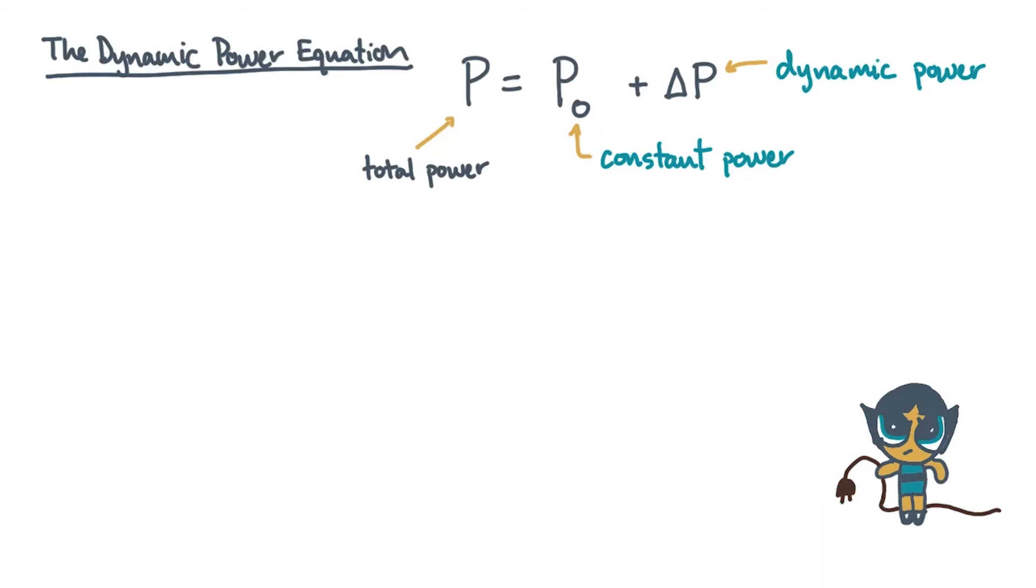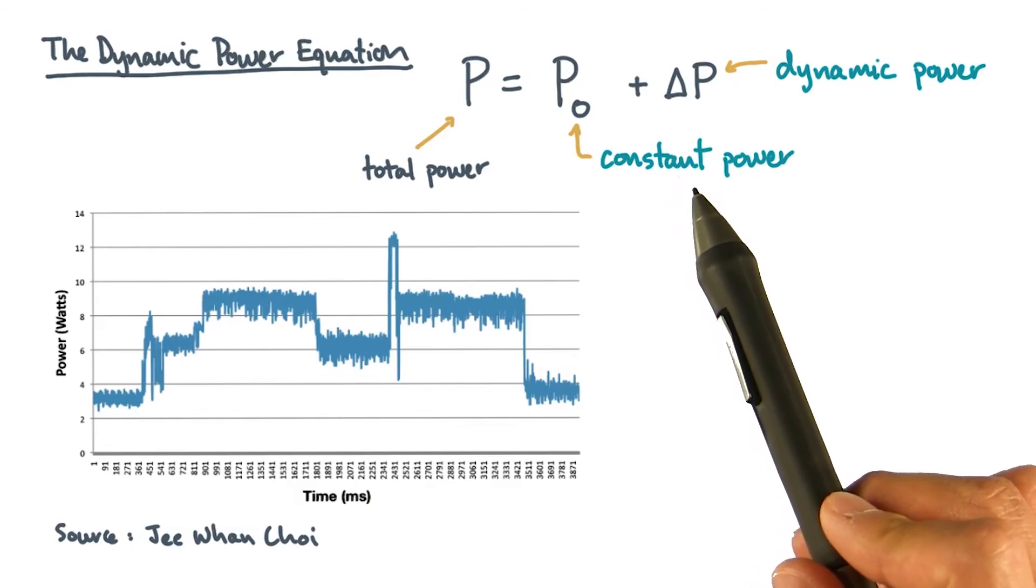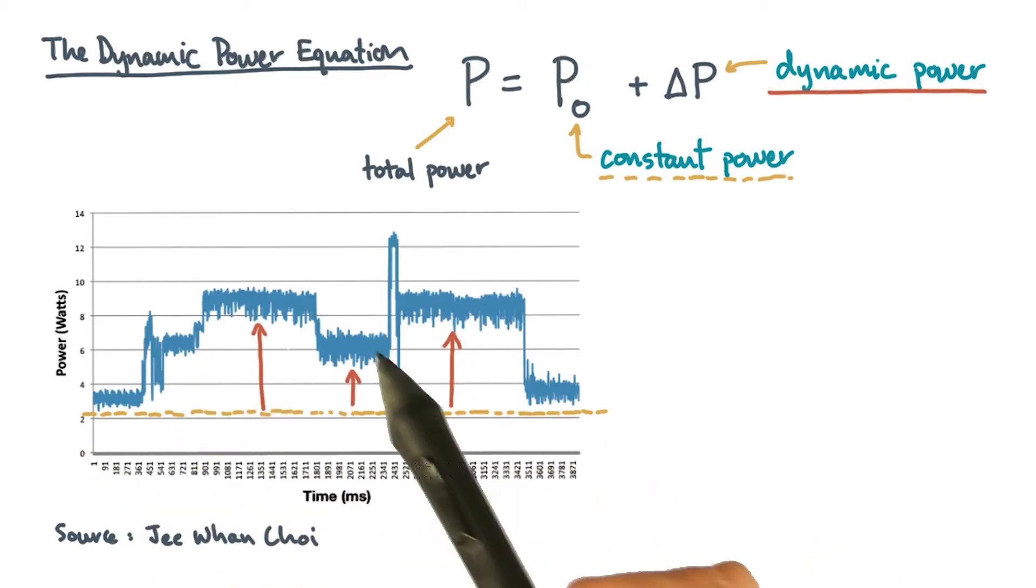Recall that the power in a computing system has, roughly speaking, two parts. The first is constant power, which is what you pay just to keep the system on. The other part is dynamic power. That's what you pay above and beyond constant power while the program is running.